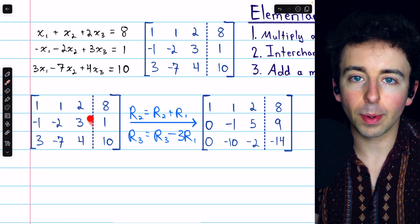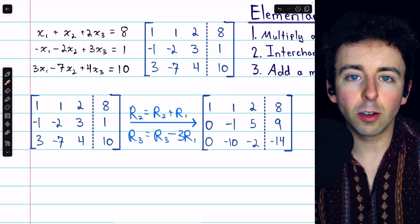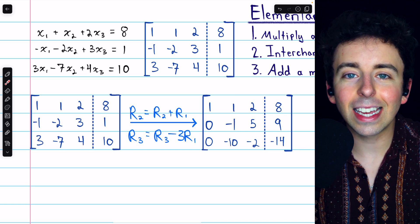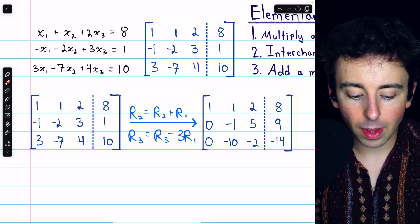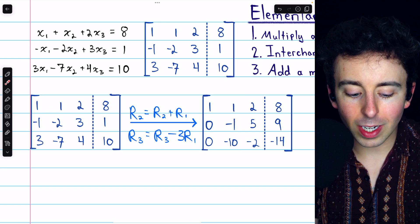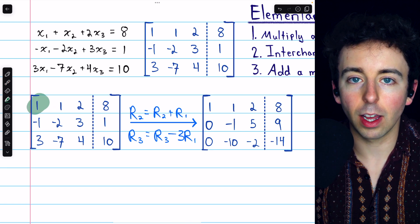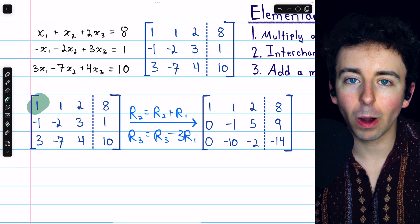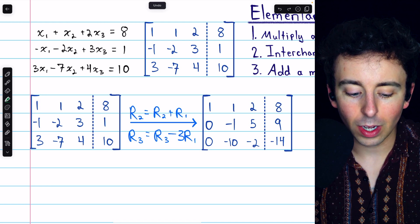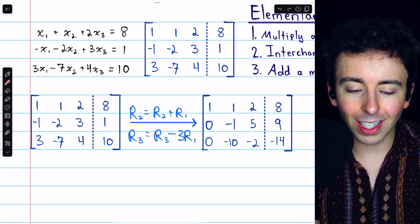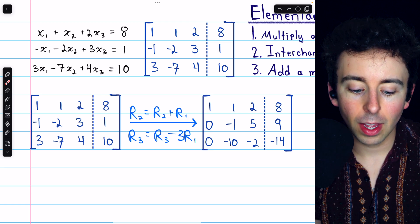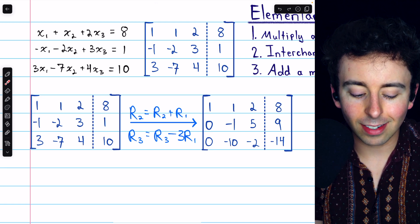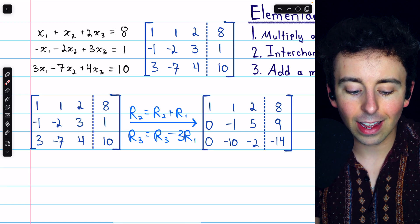Here is our augmented matrix. Like I said, for each non-zero row, we want its leading entry to be positive 1. This first row already has a leading entry of positive 1, so that's great. One other thing we need to do is get zeros below any leading 1. So this leading 1 needs to have zeros below it. To accomplish that, we'll add one copy of row 1 to row 2, which I've written there, and we'll subtract three copies of row 1 from row 3.